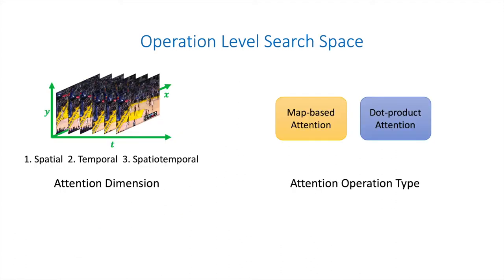For each attention operation, we need to make two fundamental choices. The first is the dimension to apply the attention, and we call this dimension the attention dimension. There are three possible choices here: spatial, temporal, or spatial-temporal. The second is the type of this operation. There are two types of attention operations, which address different limitations of convolution.